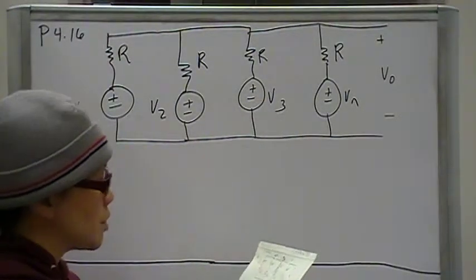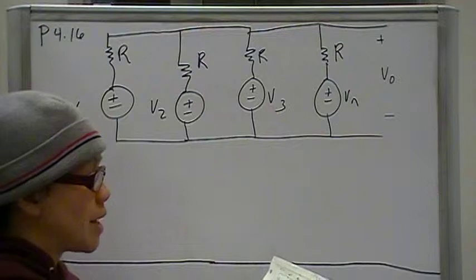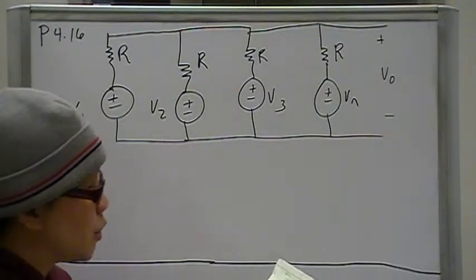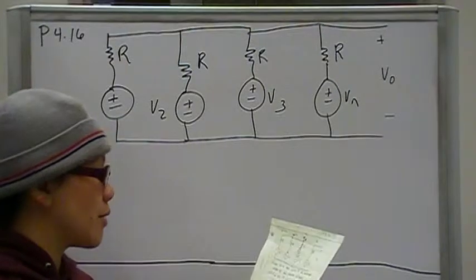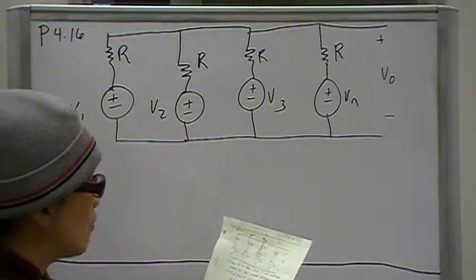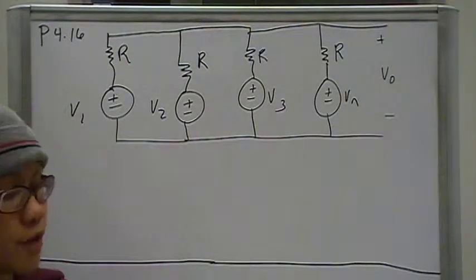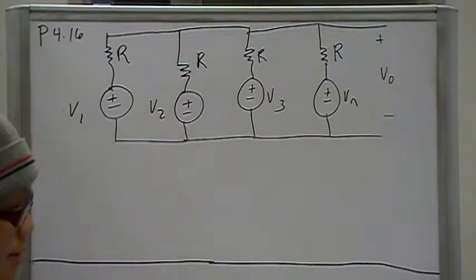So for part A, we need to use the node voltage method to show that Vout is the average value of the voltage sources. And in part B, we need to find Vout if VN is 100 volts, V1 is 100 volts, V2 is 80 volts, and V3 is 60 volts.